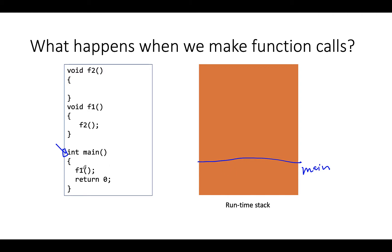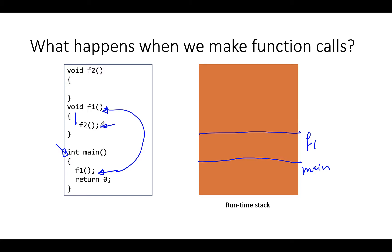As soon as we get into the main function, something called a stack frame for the function main is created. Local variables and parameters for the main function are allocated in this stack frame. Execution continues until we hit the function call, at which point control jumps to function F1, and a stack frame for F1 is created automatically, with local variables and parameters to F1 allocated within it.